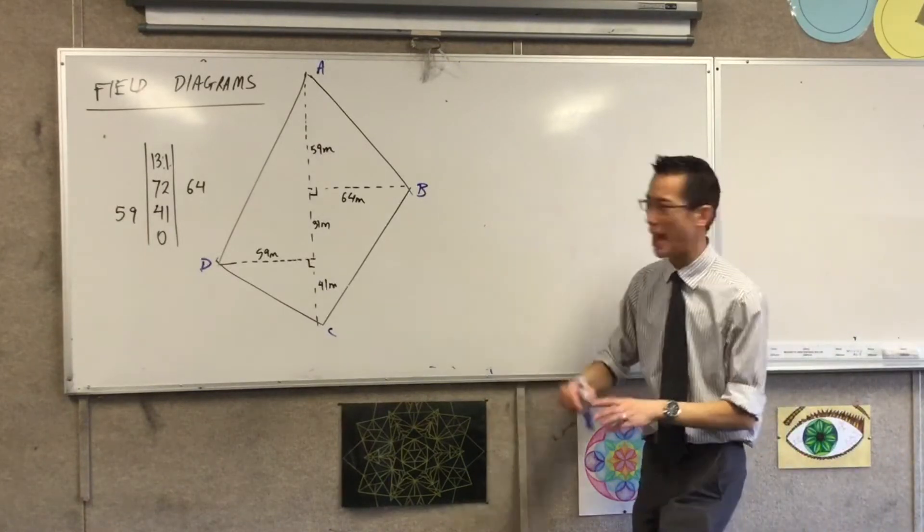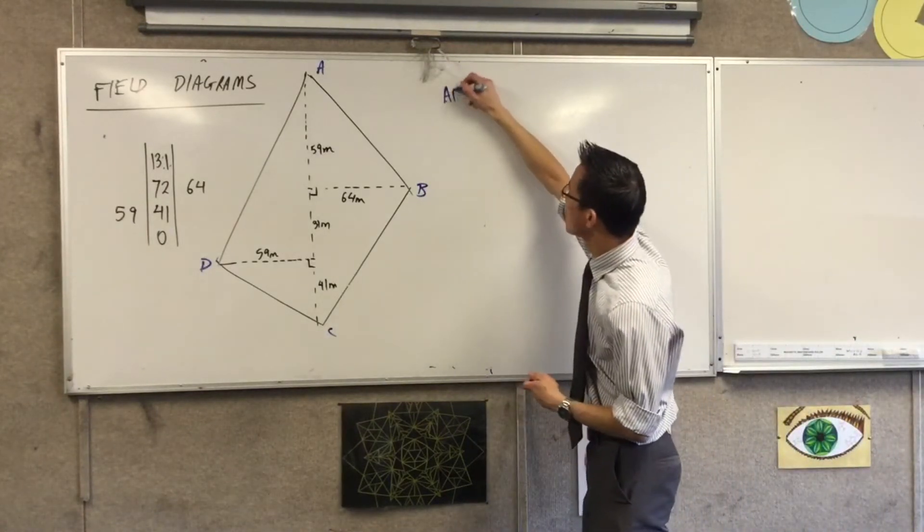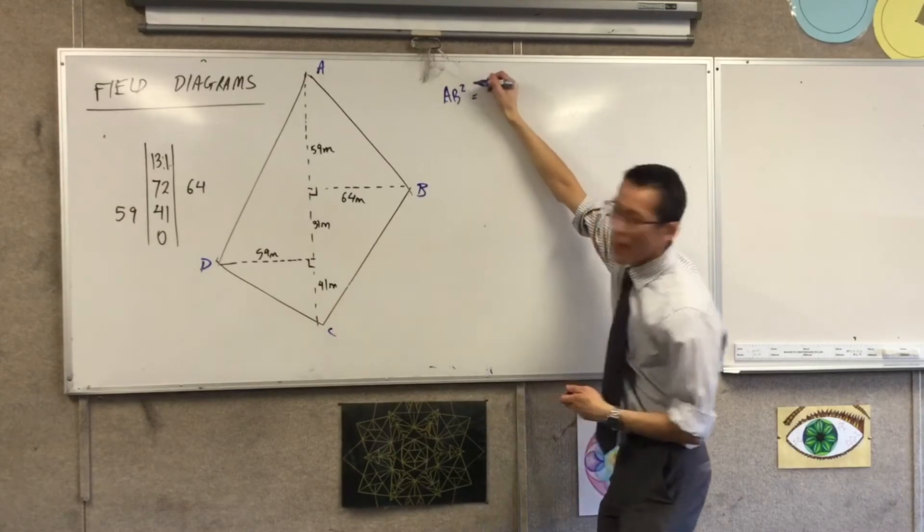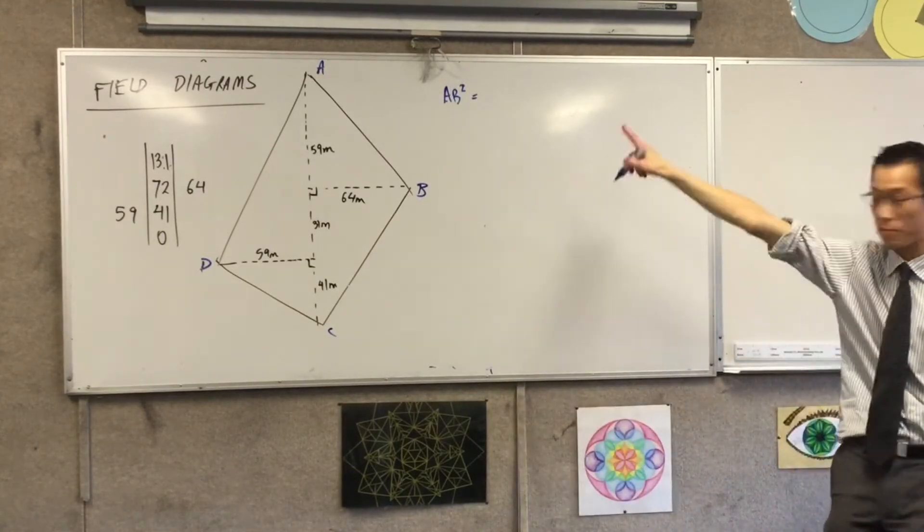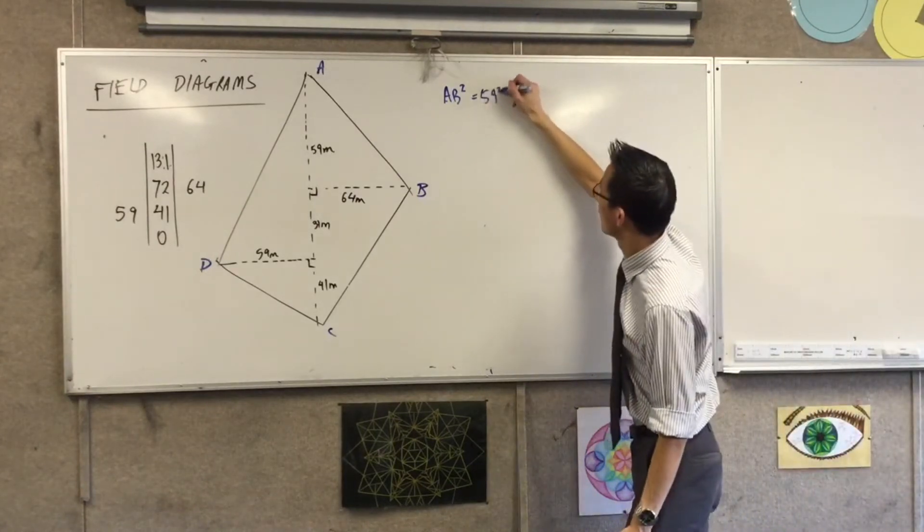So for instance, if I wanted to work out AB, I would say AB squared is, what does Pythagoras tell me, in that top right triangle? Very good.